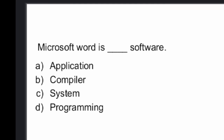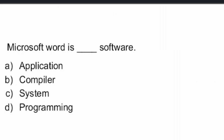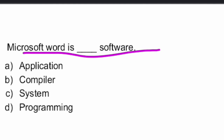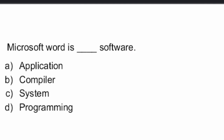Next question: MS Word is what type of software? MS Word is application software. That is Option A — application software.